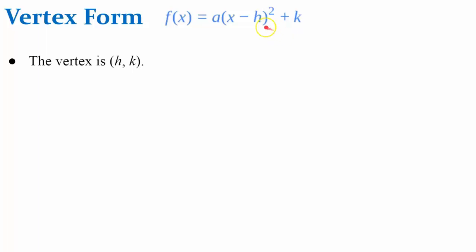The vertex is identified from h and k in the given equation. So the formula is x subtract h. So if this were x minus 2, h would be 2.